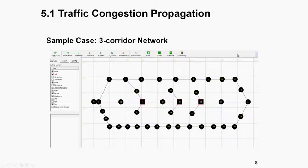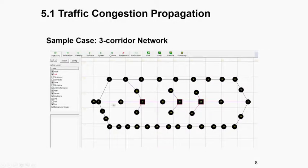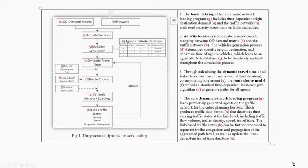Let's begin with our three-corridor network. Before going into the three-corridor network introduction, I want to show a few slides to help you understand the basic attributes. For example, we have corridor one, corridor two, and corridor three. We only have one OD pair, starting from origin zone 42 to node 2.